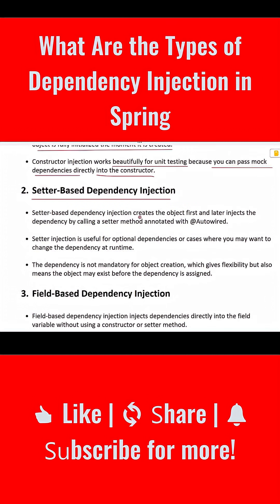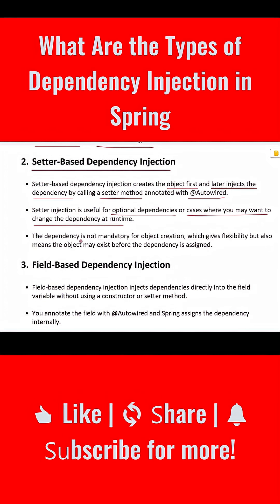The second one is setter-based dependency injection. In this approach, Spring creates the object first and later injects the dependency by calling a setter method annotated with @Autowired. Setter injection is useful for optional dependencies or cases where you may want to change the dependency at runtime. The dependency is not mandatory for object creation, which gives flexibility but also means the object may exist even before the dependency is assigned.